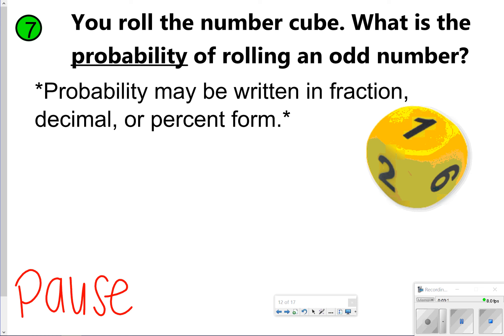All right, it says you roll the number cube. What's the probability of rolling an odd number? Remember on the number cube, you have the numbers 1, 2, 3, 4, 5, and 6. And all the odd numbers are circled, 1, 3, and 5. So that is three numbers out of six, or one half.